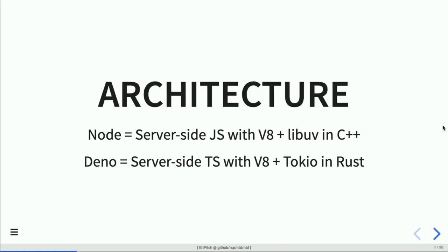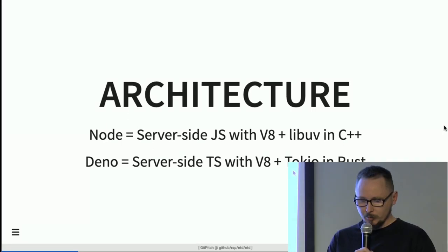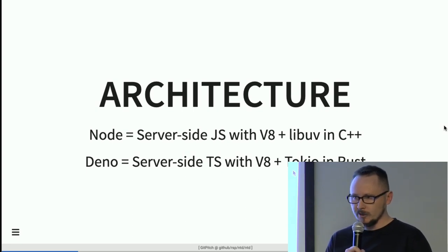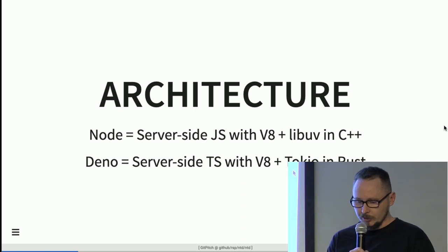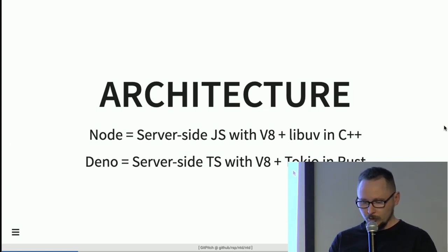The main difference with Node.js — people usually compare them, and rightly so — is that Node is basically server-side JavaScript with V8 and libuv, written in C++. Deno, on the other hand, is server-side TypeScript. It can also run JavaScript but doesn't need any transpilation steps. It is also based on V8 but built in Rust and uses the Tokio framework for I/O, just like Node uses libuv.